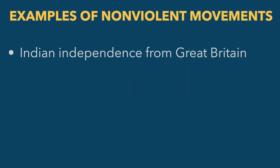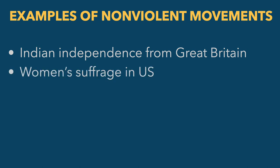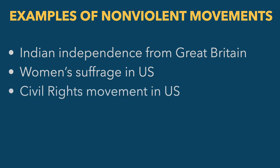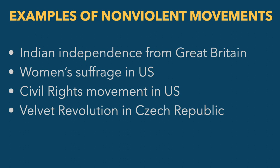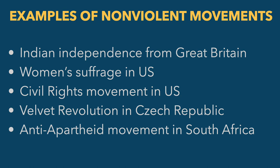The civil rights movement is one example, but there are many others in history. Indian independence from Great Britain — Gandhi's leadership actually became the inspiration for Martin Luther King, and King actually studied with Gandhi to learn the basic principles of nonviolent resistance. The women's suffrage movement in the United States is a great example of nonviolent resistance leading to justice. The Velvet Revolution in the Czech Republic was another example. And the anti-apartheid movement in South Africa — though there was some violence there, it wasn't encouraged by anti-apartheid leaders like Mandela and Tutu. We can see many examples of nonviolent resistance leading to large-scale change and more just outcomes.